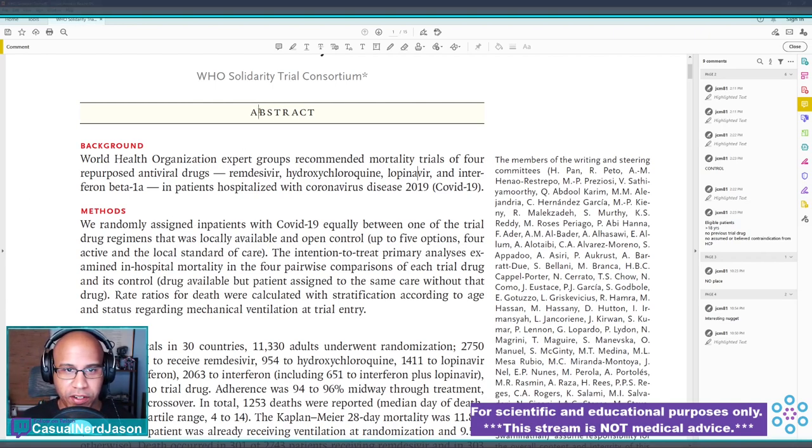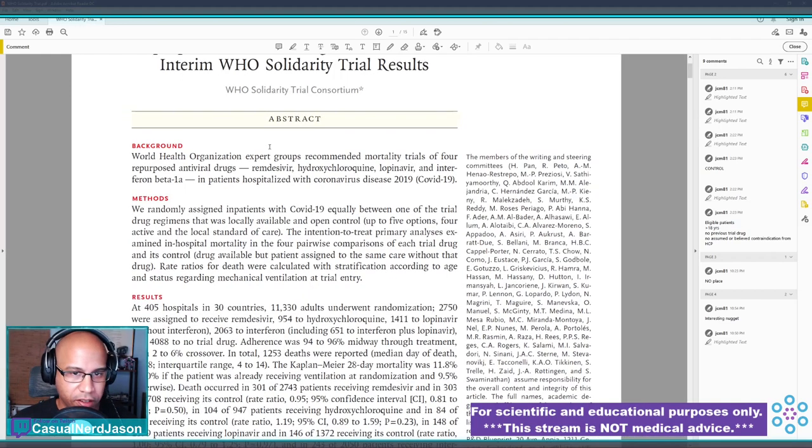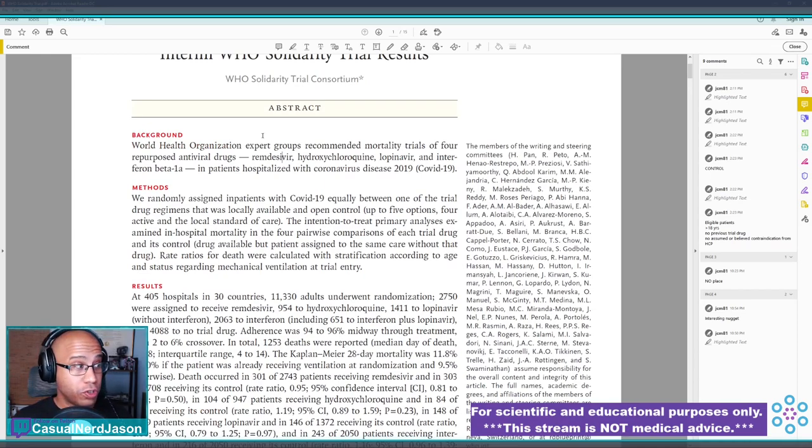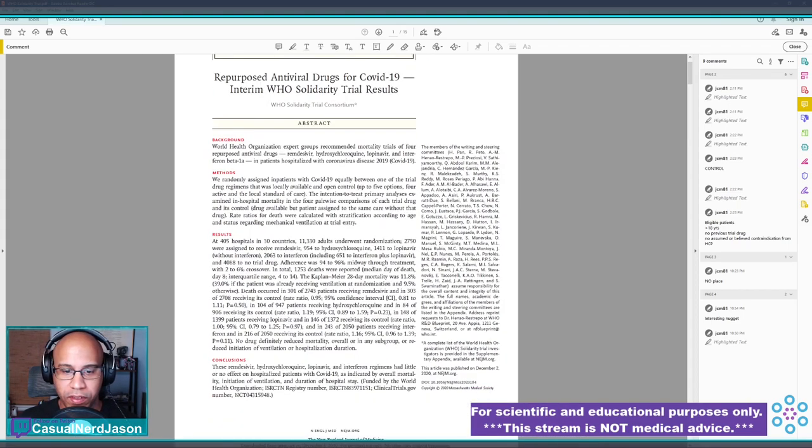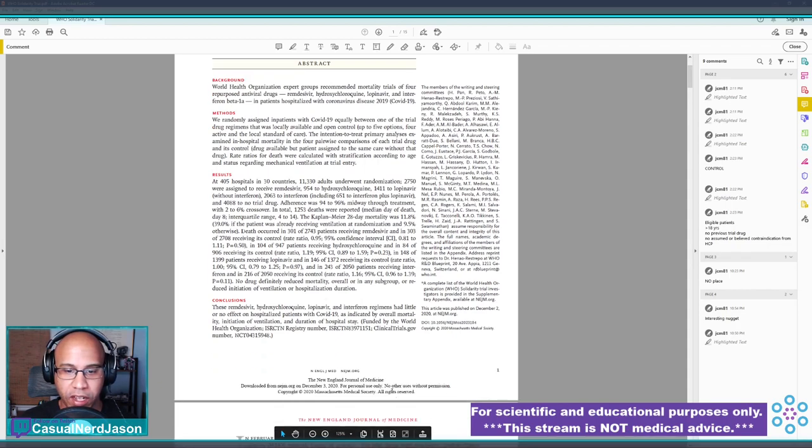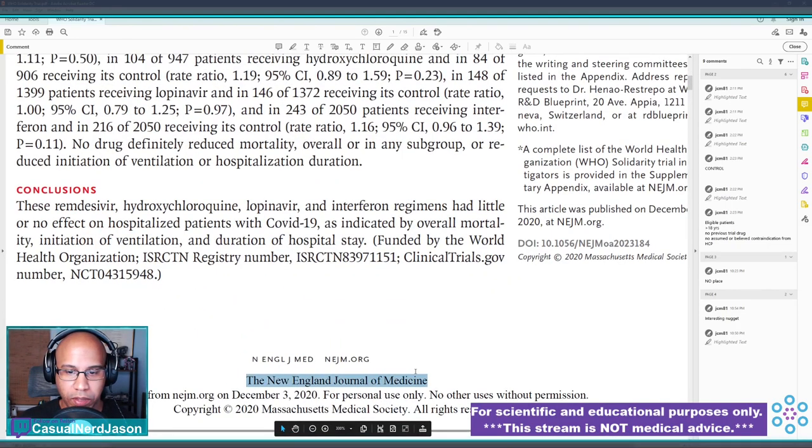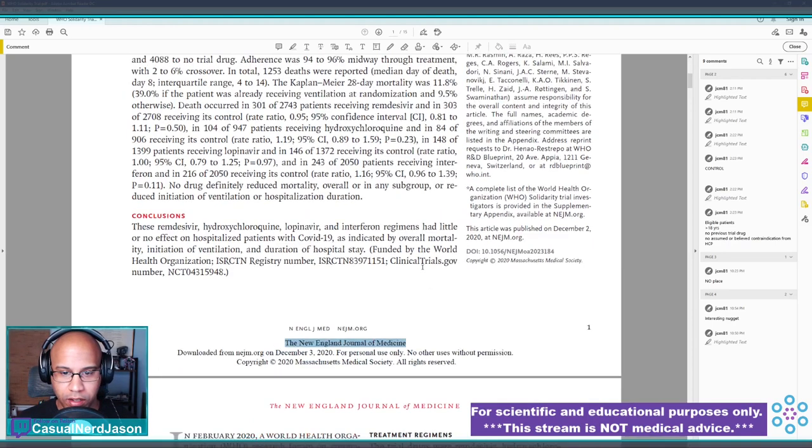This is the abstract here. If you've never seen a scientific journal before, or a journal publication I should say, it usually starts off with an abstract that has a few different sections, or it's all written as one straight paragraph or so. This is in the New England Journal of Medicine - you've probably heard of it before. It's one of the top ones.